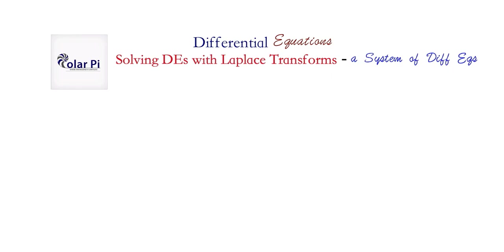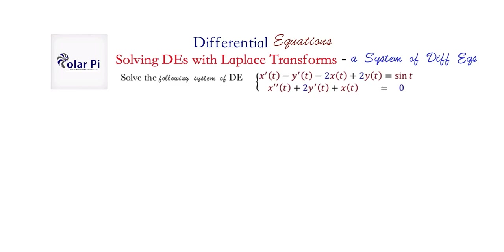So let's get on with it. As opposed to when we're solving a single differential equation, when we're solving a system, we're going to have two functions. Remember, in those three previous examples, even in the one that was fourth order, it was just one function — y and its derivatives. But here we have y and its derivatives, and x and its derivatives, and therefore a system.